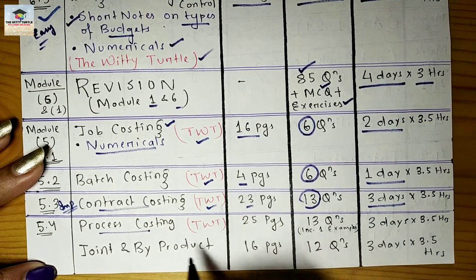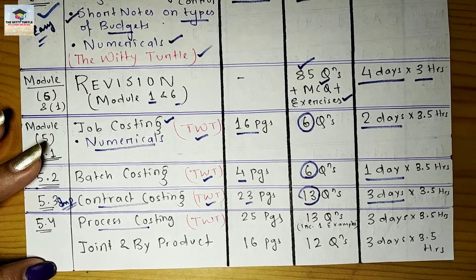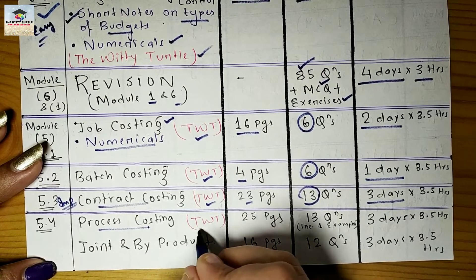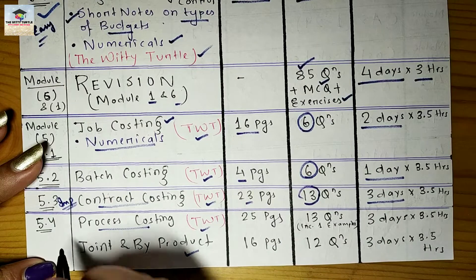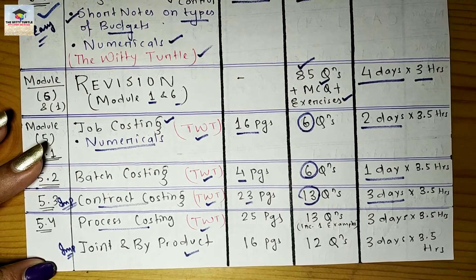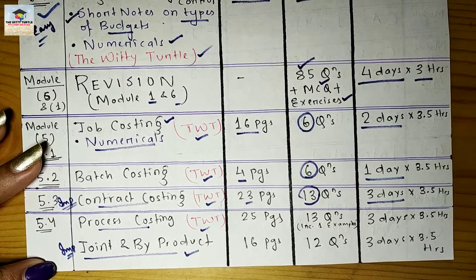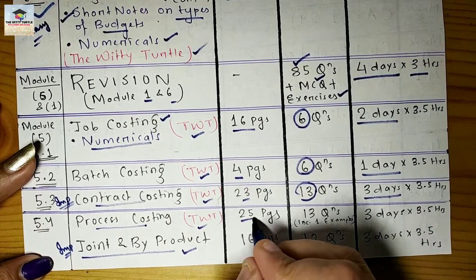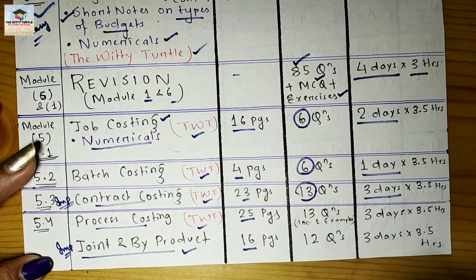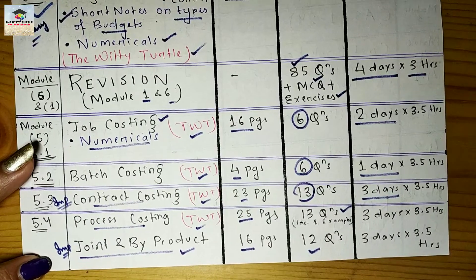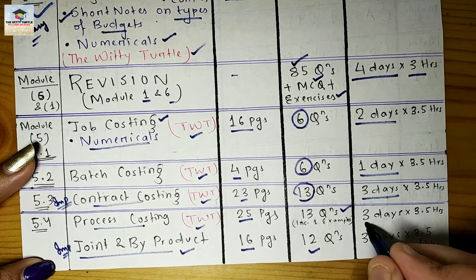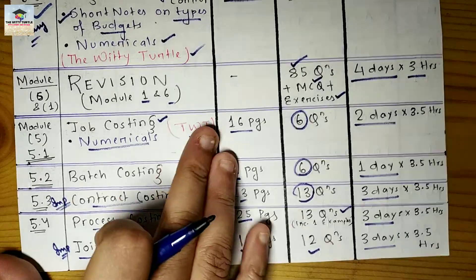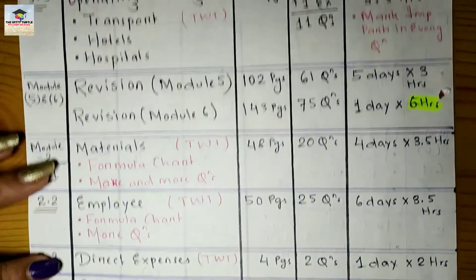Next is Process Costing, and then Joint and Byproduct Costing — both are on my YouTube channel. I recommend paying special attention to Joint and Byproduct Costing as it's a bit difficult to understand, but my classes will help. Process Costing has 25 pages and 13 questions; Joint and Byproduct has 16 pages and 12 questions — 25 questions in total — and each will take three days to complete.